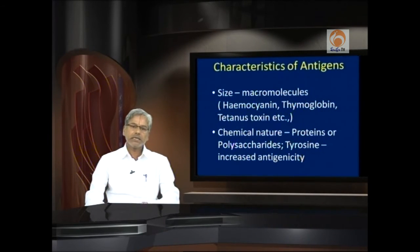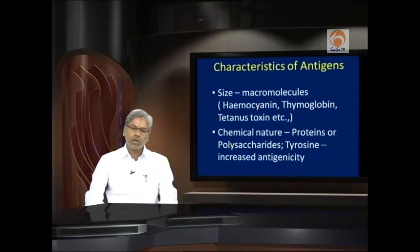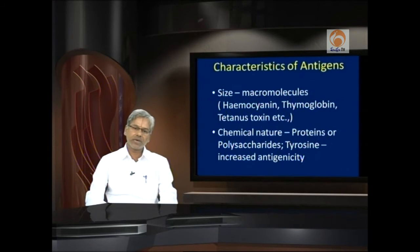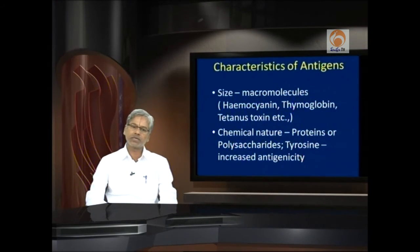Considering the characteristics that render antigens more immunogenic: antigens are macromolecules — the more the size, the more the immunogenicity. For example, hemocyanin is about 6,000 kilodaltons, thyroglobulin about 629 kilodaltons, and tetanus toxin is about 55 kilodaltons. Chemically, an antigen may be protein, polysaccharide, or lipid. Proteins and polysaccharides, when antigenic, generate efficient immune responses. And tyrosine, whenever present in the sequence of an antigen, increases antigenicity.